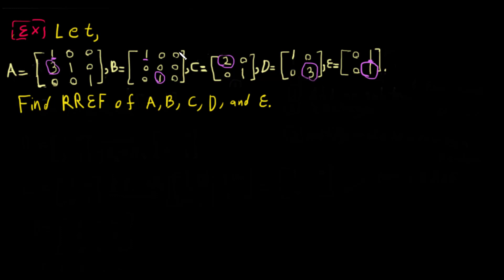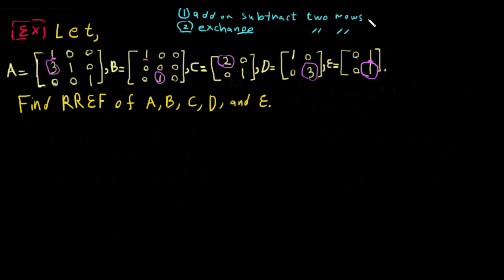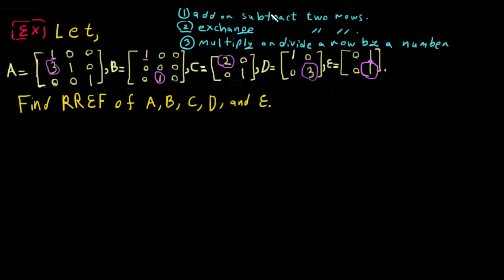The three rules we can use are: first, we can add or subtract two rows; second, we can exchange two rows; and third, we can multiply or divide a row by a number.